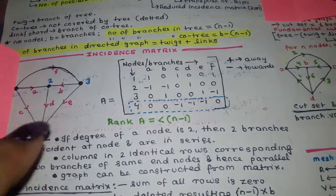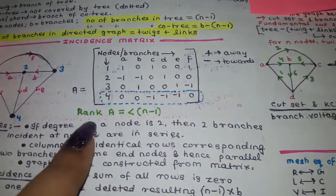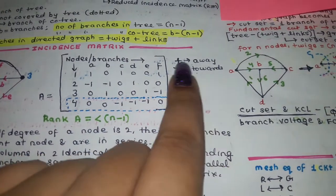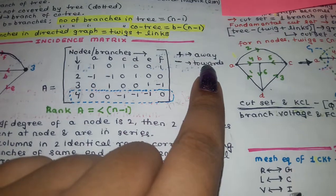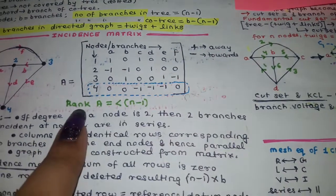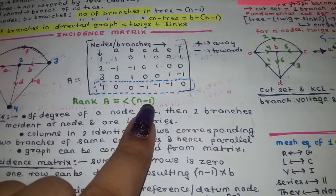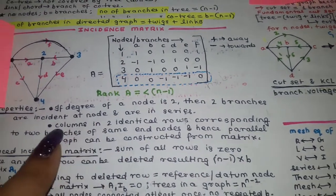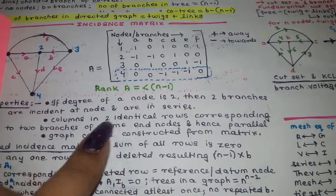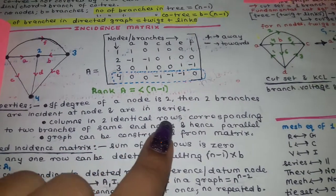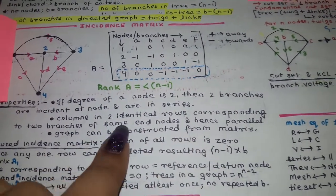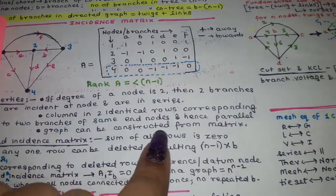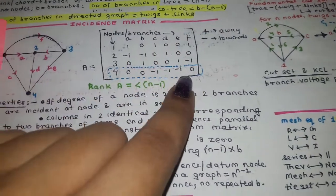We do this for all nodes, and the matrix hence obtained is the incidence matrix. Remember: away from the node is plus 1, towards the node is minus 1. The rank of this matrix cannot be greater than n minus 1. Also, if the degree of a node is 2, then two branches are incident at that node and are in series. Two identical columns correspond to two branches with the same end nodes, indicating parallel branches, and the graph can be reconstructed from the matrix.